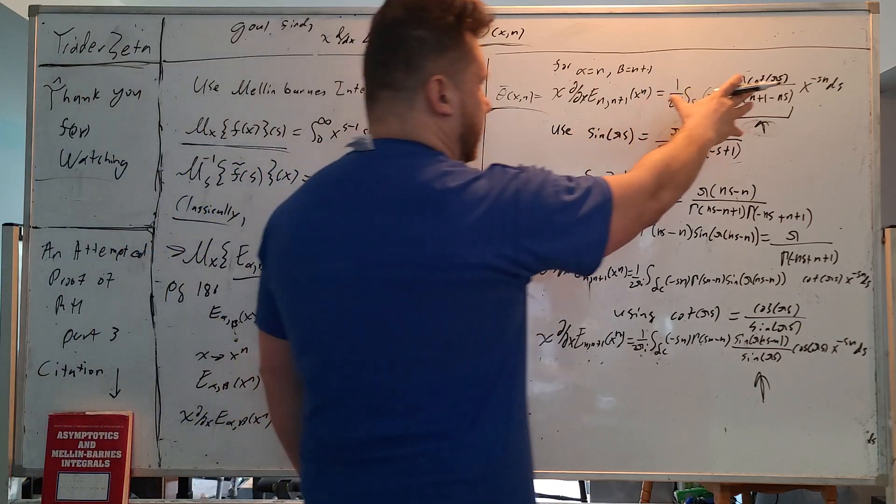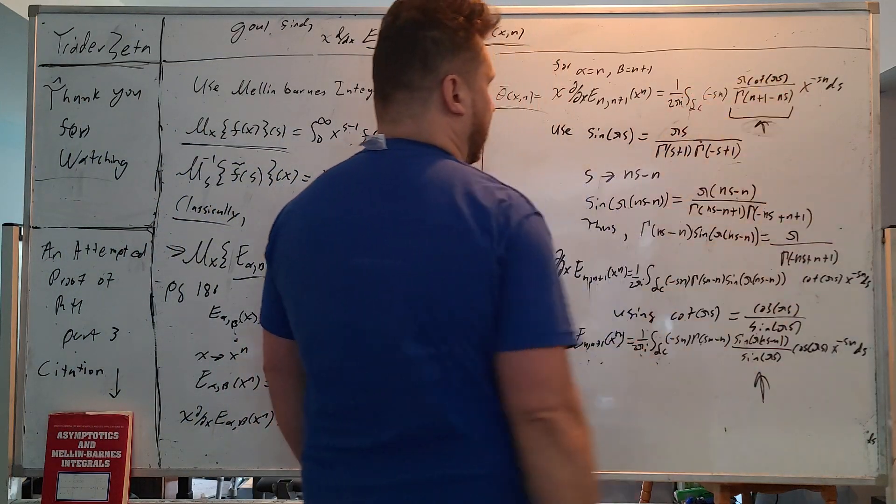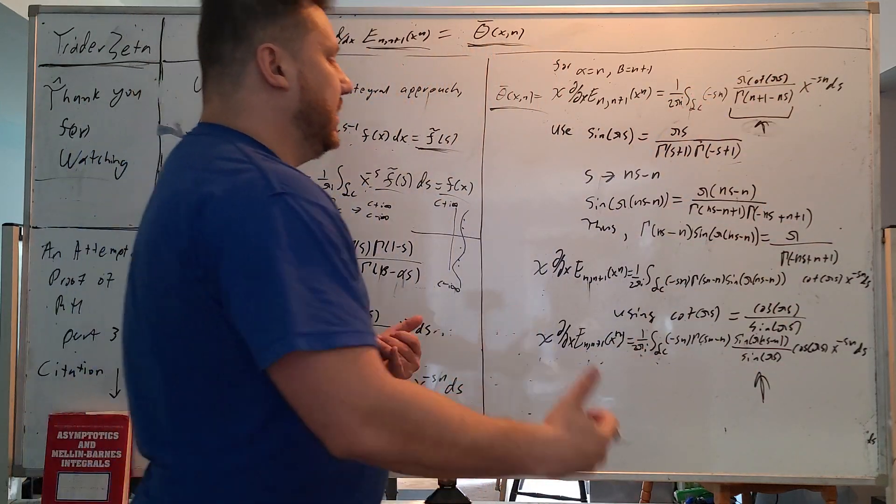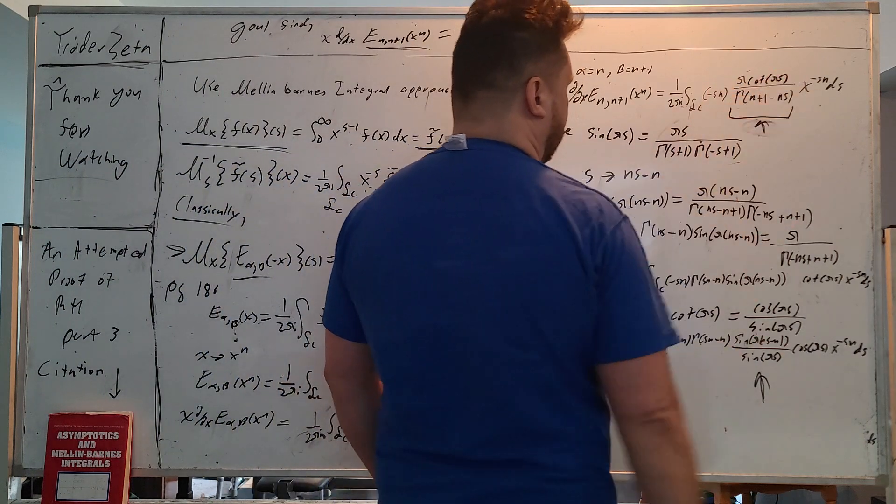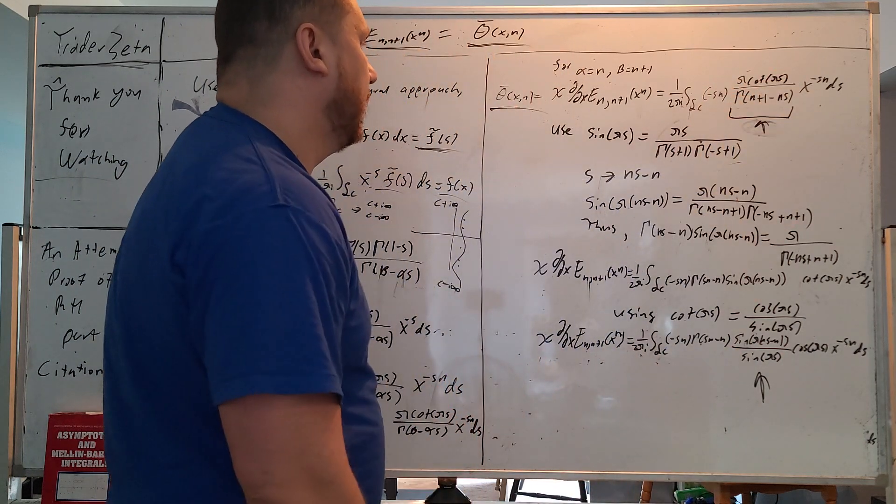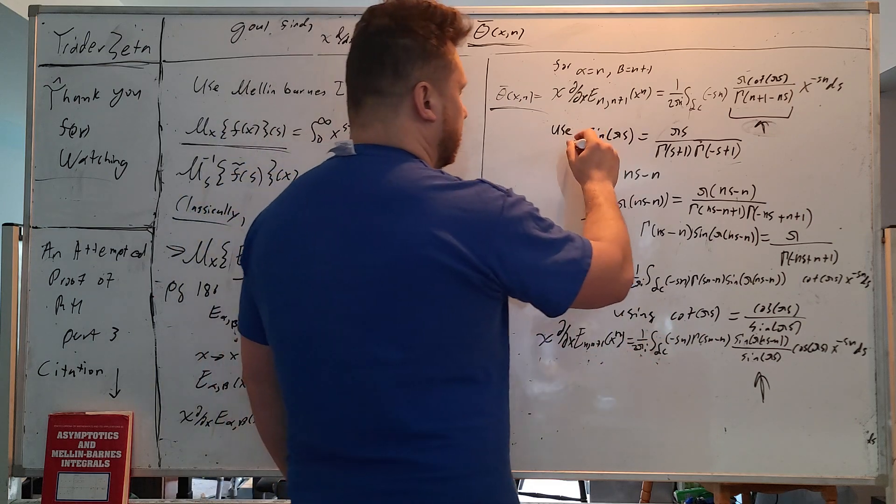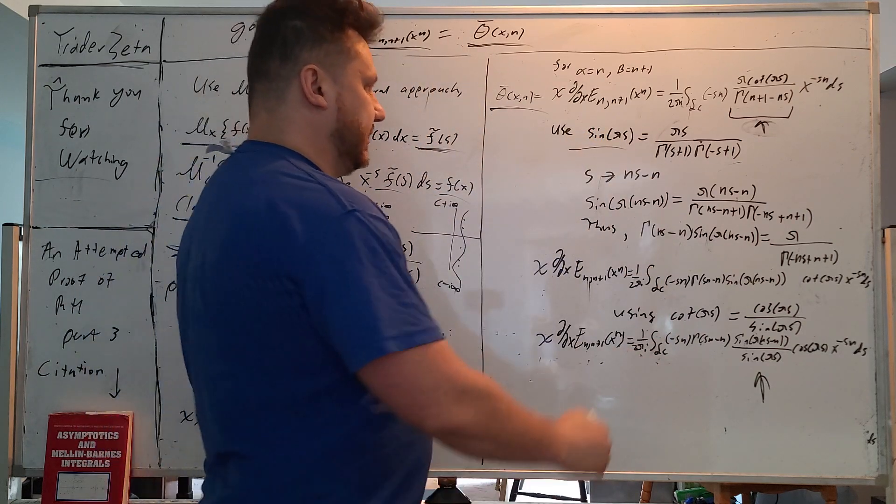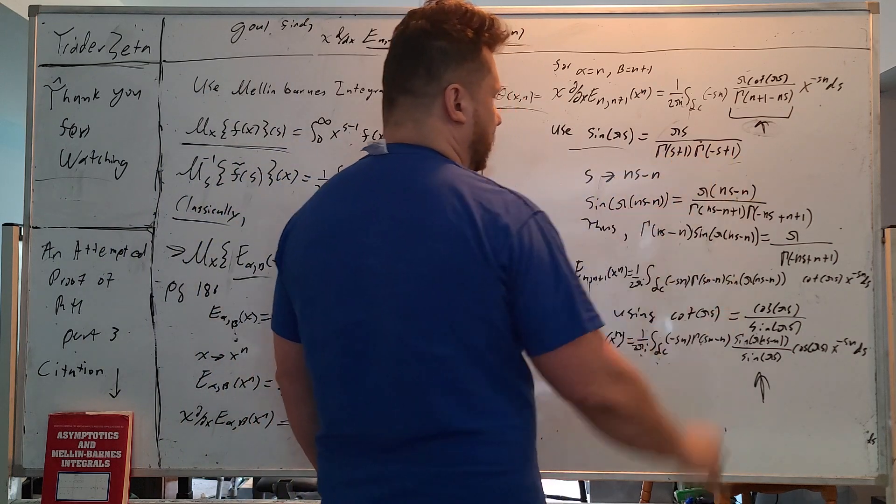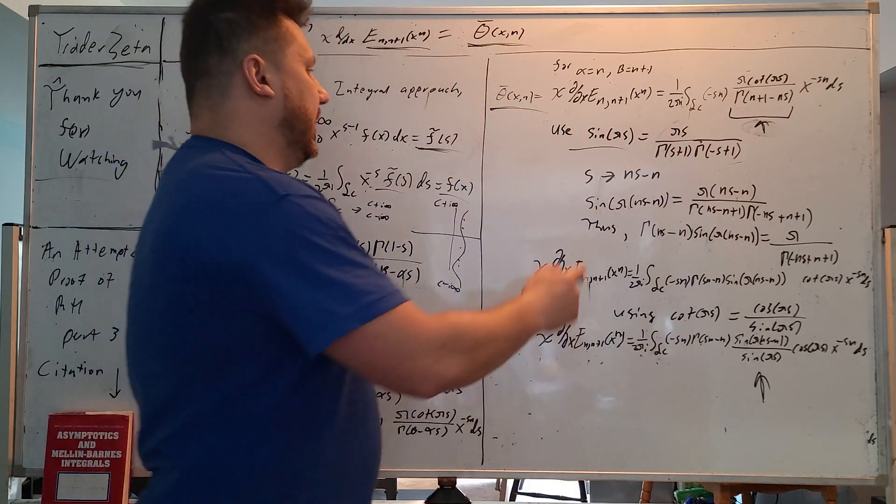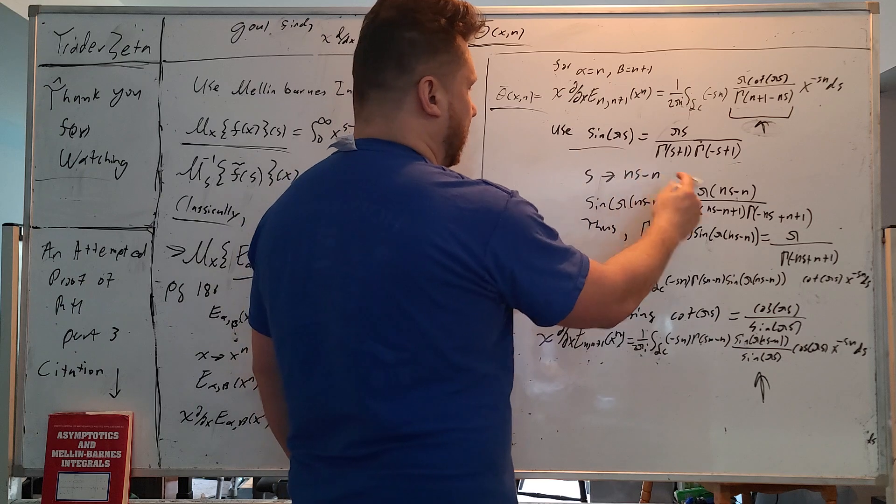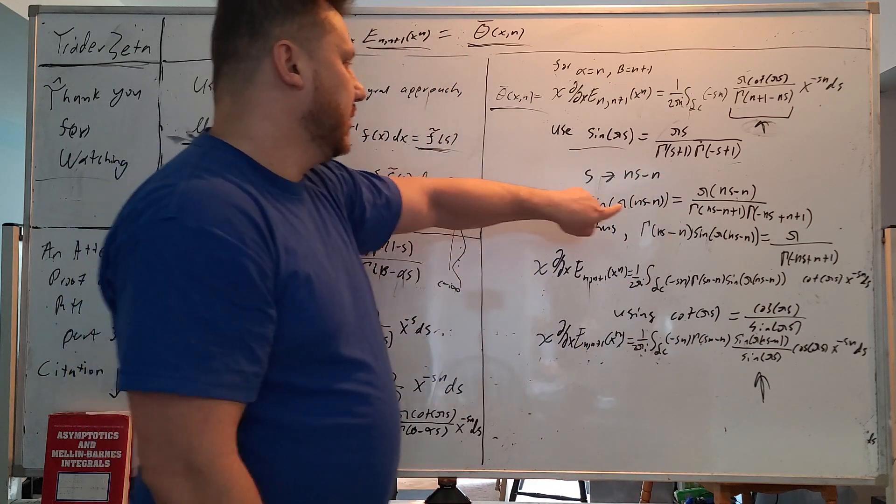Now this is very nice because we can do some really good analysis on this, but we can't do it immediately. We have to chop at this term right here. So just like in the book, we're going to use this identity. Sine pi s equals pi s divided by these gamma functions. And s is going to go to ns minus n. We plug that in.